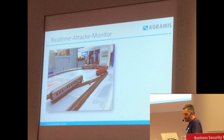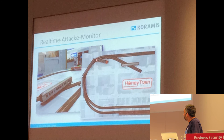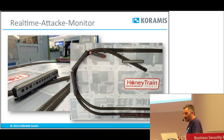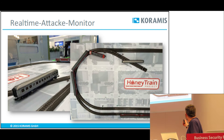Wir haben dann abgewartet und gesehen, dass hier hinten — Sie müssen sich das gleisförmig vorstellen — irgendwann das Signal grün kam. Wir sind davon ausgegangen, dass irgendwann der nächste Zug startet und dann auf diesen Zug, der auf dem Gleis liegt, nochmal im Gegengleis fährt. Es war ein ausführlicher Angriff. Wir haben ihn aber abgebrochen, einfach weil uns die Züge Geld kosten — so ein Zug kostet irgendwie 300 Euro. Wir haben zwar ein paar Ersatzzüge, aber den Angriff haben wir aus Kostengründen abgebrochen.